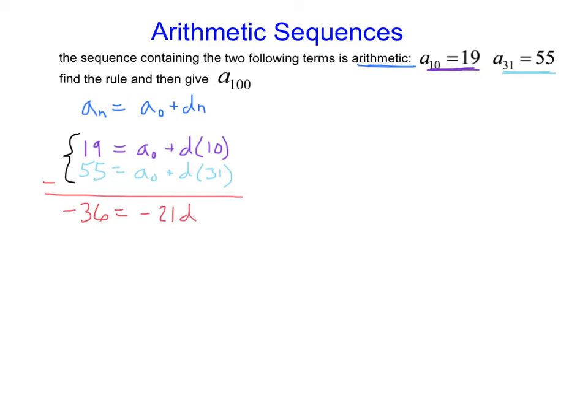Okay, let's do some division here. 36 over 21. These are both divisible by 3. So that's going to give me negative 12 over 7. Oh, negative 7. So, got a common difference of 12 sevenths.